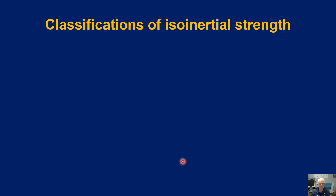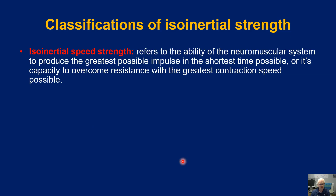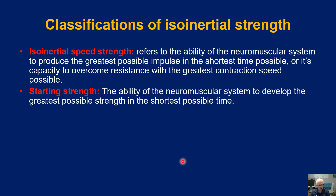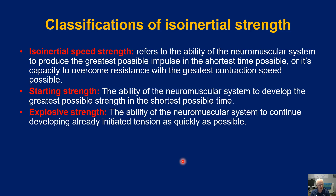We then get subdivisions: isoinertial speed strength — the ability of the neuromuscular system to produce the greatest possible impulse; starting strength — the ability of the neuromuscular system to develop the greatest possible strength; and explosive strength — the ability of the neuromuscular system to continue developing already initiated tension.